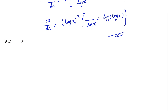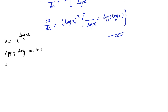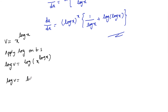Now v is equal to x^(log x). Apply log on both sides: log v equals log of x^(log x), which we can write as log v equals log x times log x, that is (log x)^2.